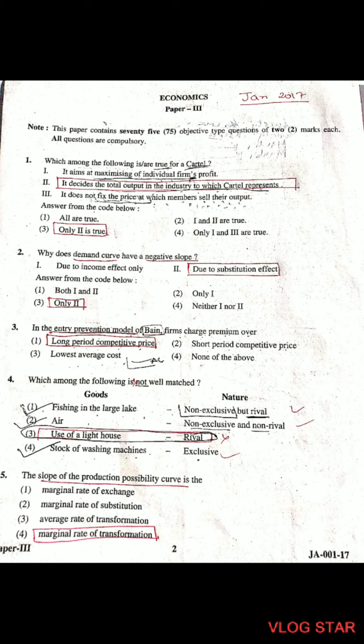Question 4: Which of the following is not correctly matched? The third option is not correctly matched because it says use of a lighthouse is rival in nature — but use of a lighthouse is NOT rival in nature, so it is incorrect. The other three are correct: fishing in a large rig is non-exclusive but rival in nature; air is non-exclusive and non-rival; stock of a washing machine is exclusive.